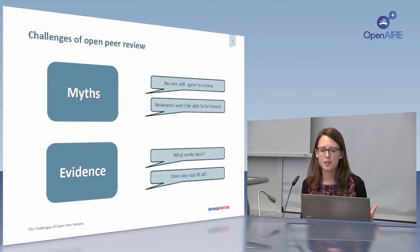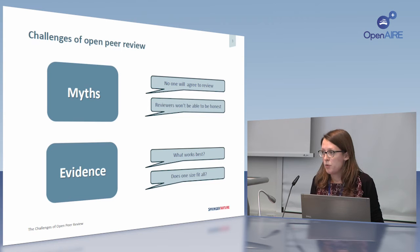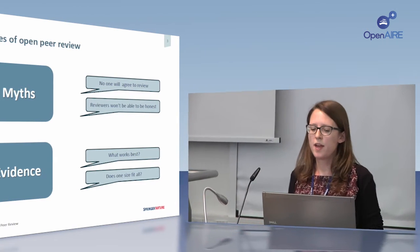Underpinning some of these problems is the other challenge: the lack of evidence. There's a lack of evidence into open peer review, but also into peer review itself — as to whether it works, what models work best, and whether, as I think is more likely, different models are needed for different specialties, different communities, and what really works best. Thank you — I will pass over to the next panellist.